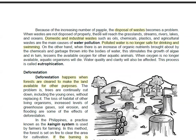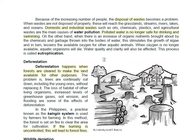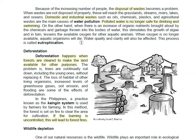Aside from air pollution, you have water pollution, which is caused by different domestic and industrial wastes — from our homes and from factories. Once water is polluted, it is no longer safe for drinking or swimming, and it will affect the animals living in nearby areas. When it affects aquatic animals, this is called eutrophication, where water quality and clarity are affected.